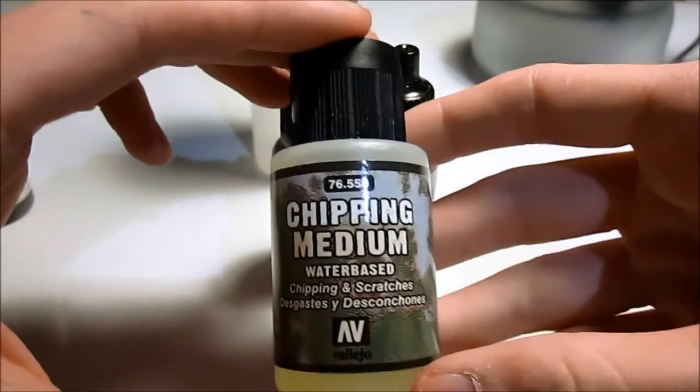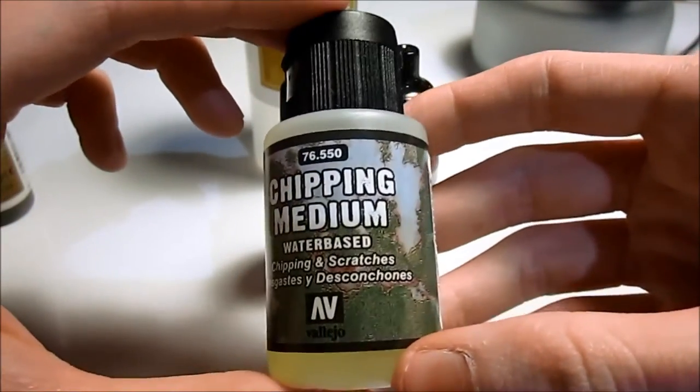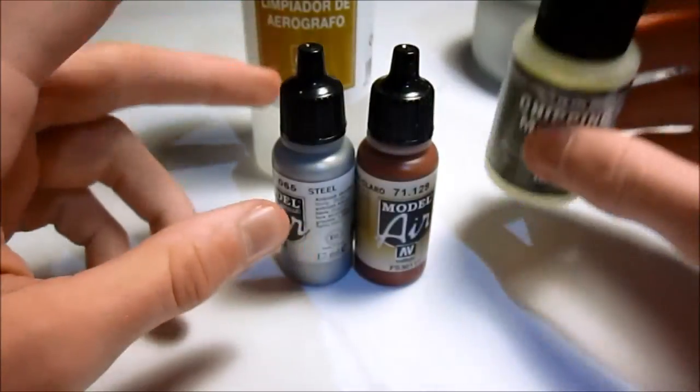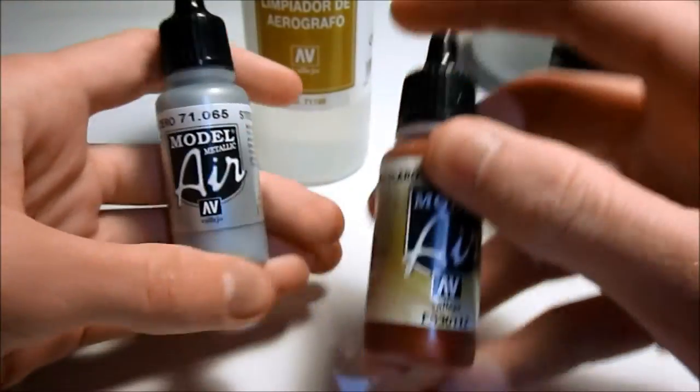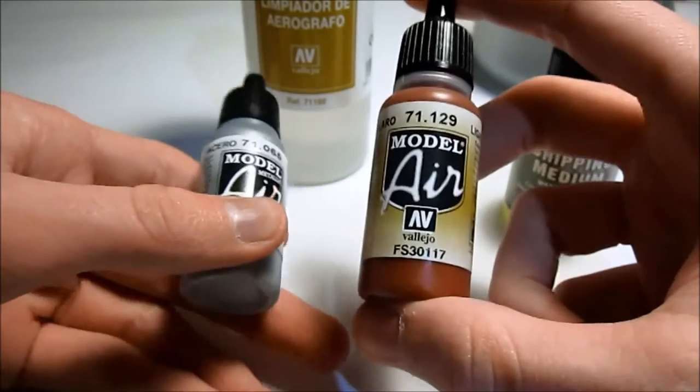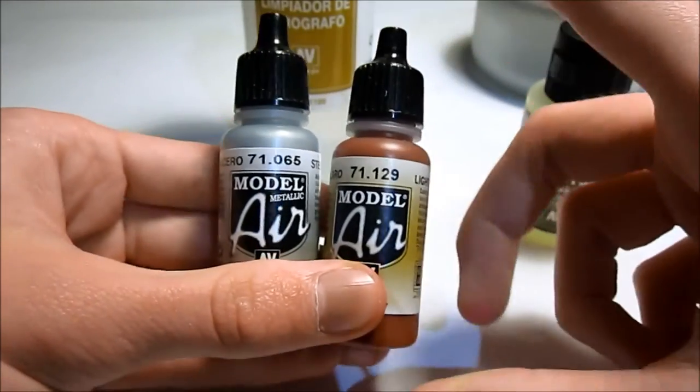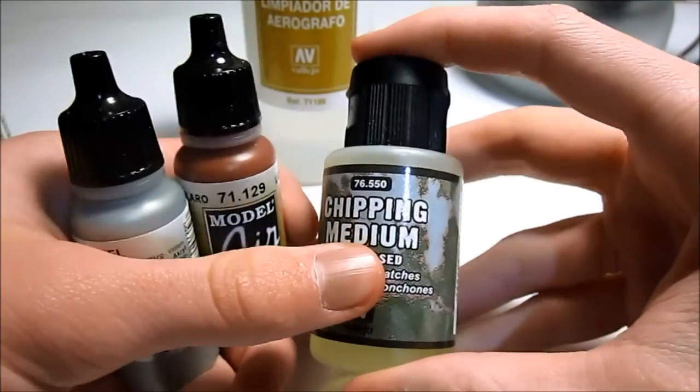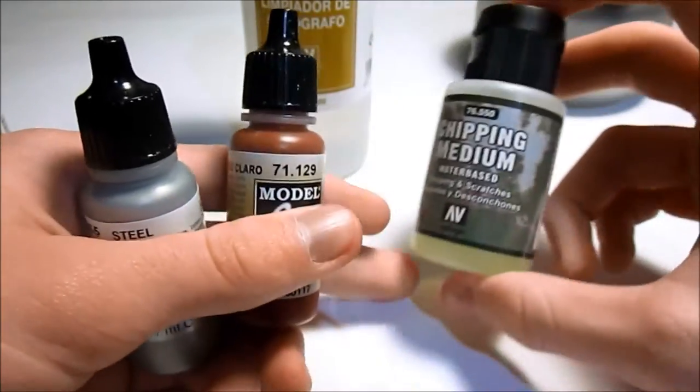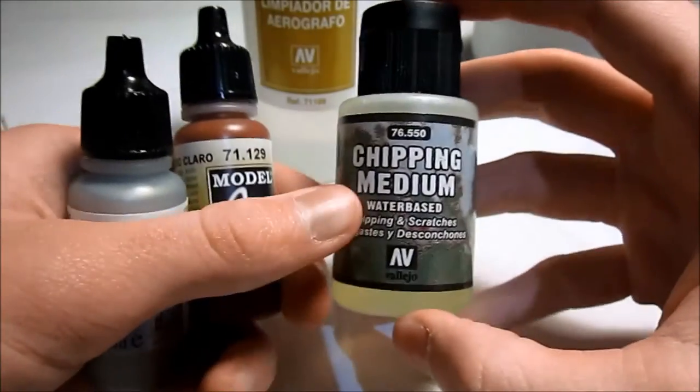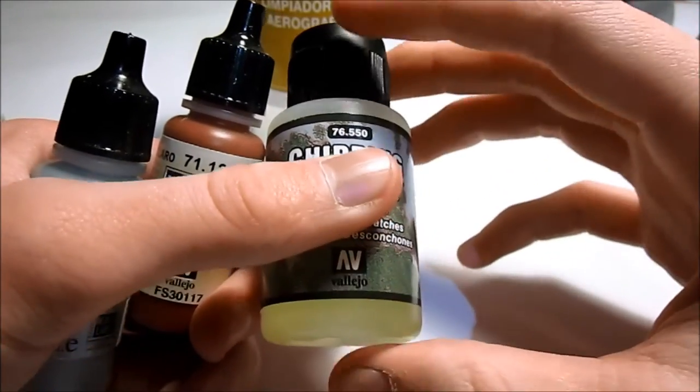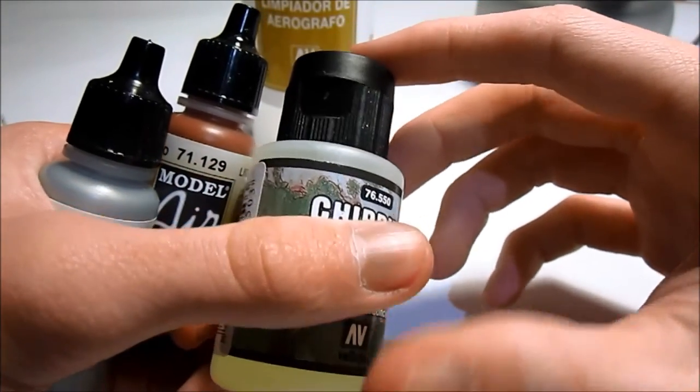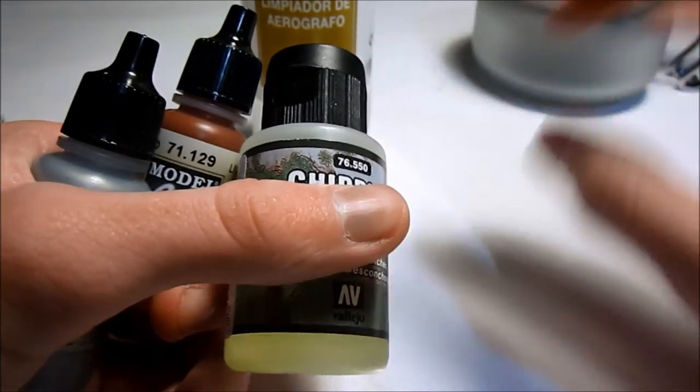Some Vallejo chipping medium water-based. So you first apply a layer of steel or rust, depends on what you want, and then you apply some chipping medium, let it dry, and then apply the next coat of paint, for example German grey.